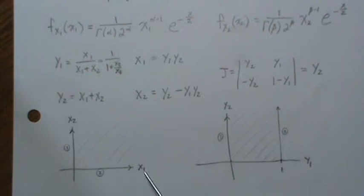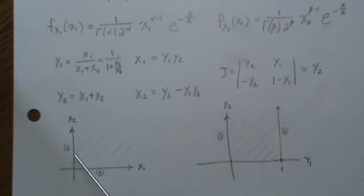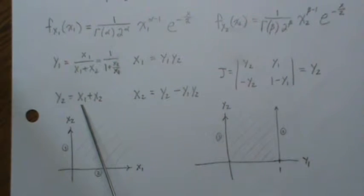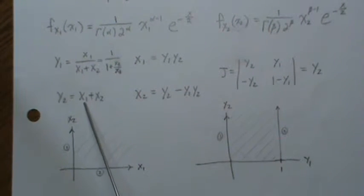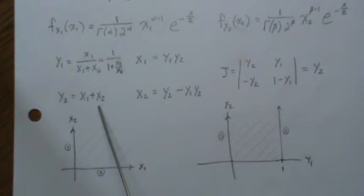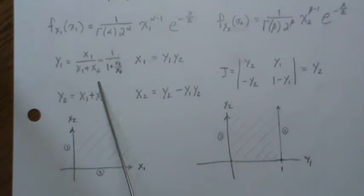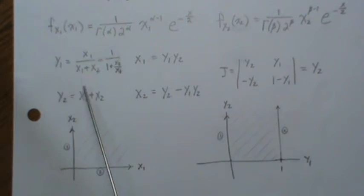So here X1 is 0 and where is it mapped to? And then X2 gets free-range. So if Y1 is 0, then Y2 goes from 0 to infinity.